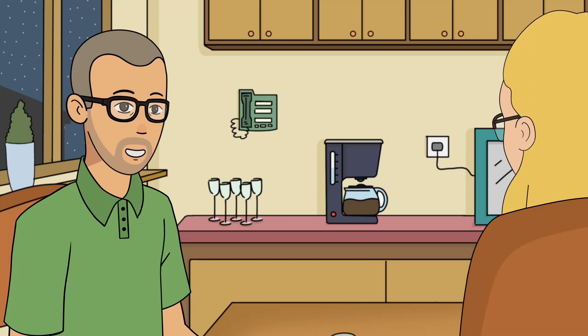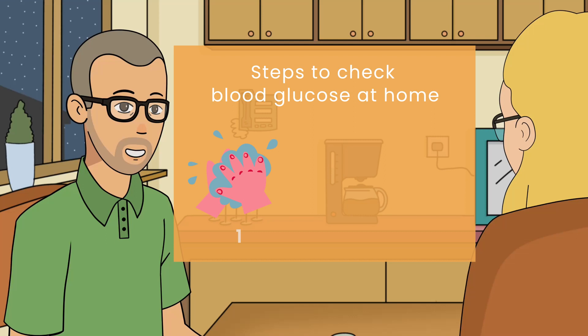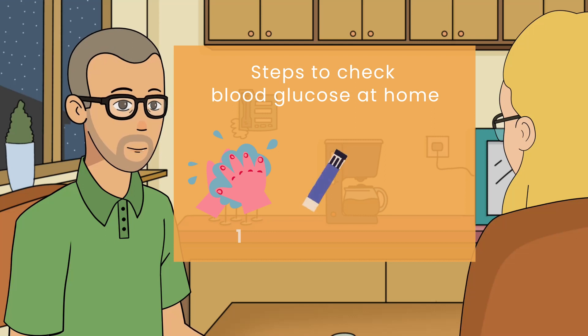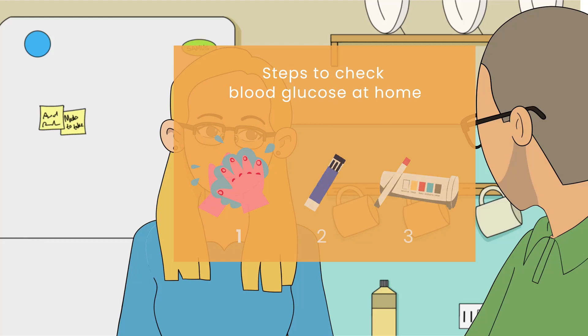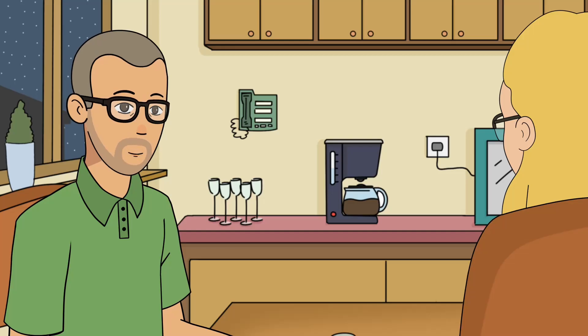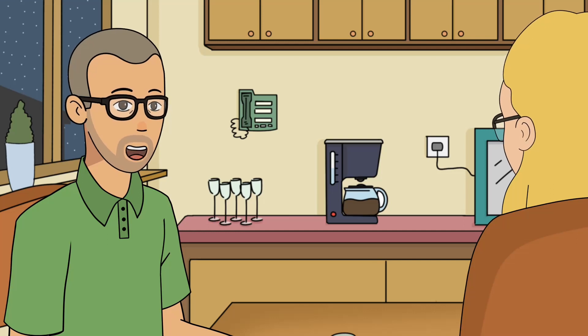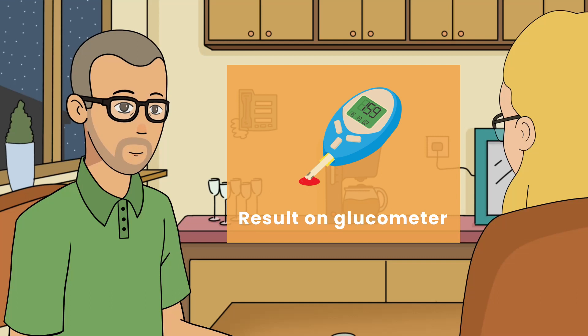So first you wash your hands with soap and water. Remember to always use a fresh lancet. Then place a glucose test strip on the glucometer. You need to use a new test strip each time. Make sure the code on the strip matches the code on the meter. Then you squeeze from the finger's base and carefully place a drop of blood onto the test strip. In a few minutes, the test results will be displayed.